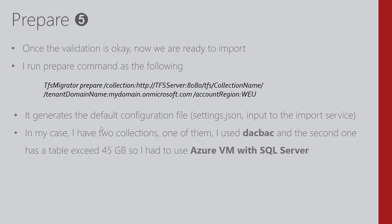The settings file contains all the configuration including the mapping between Azure AD accounts and the original on-premises accounts. I can edit this file — for example, changing an account from active to historical to disable it. In my case I had two collections: one was fine for dacpac, but the other had a table exceeding 45 gigabytes so I needed to use an Azure VM with SQL Server for that one.